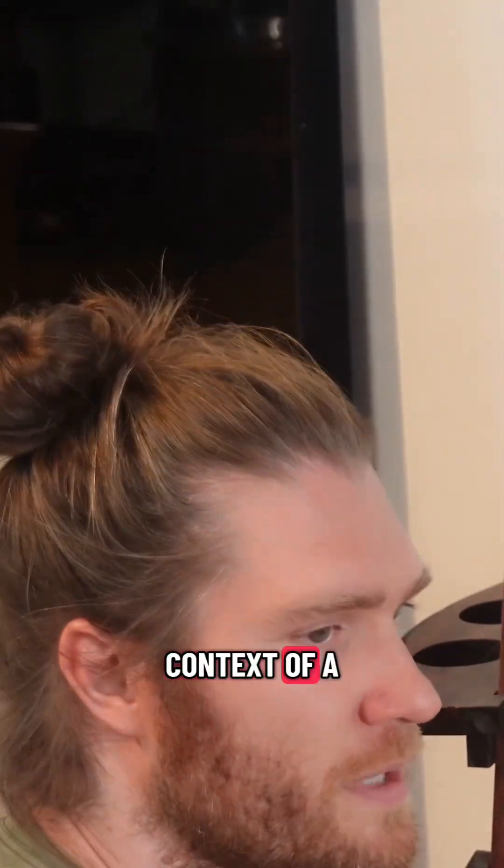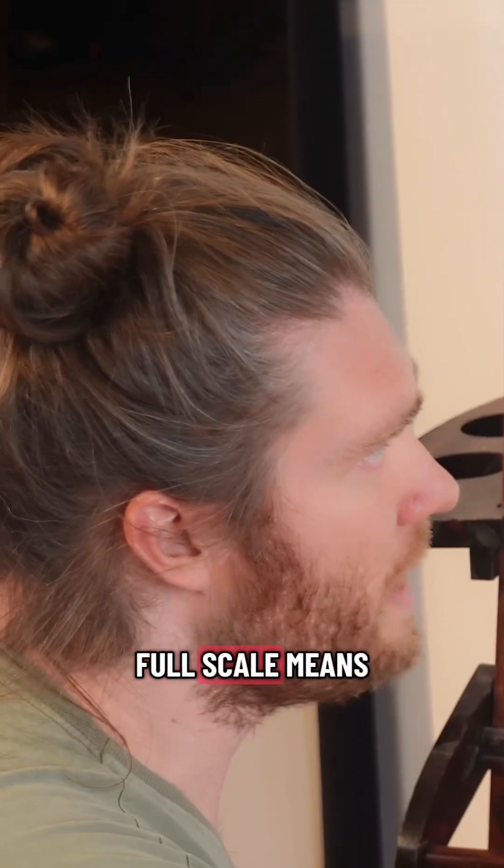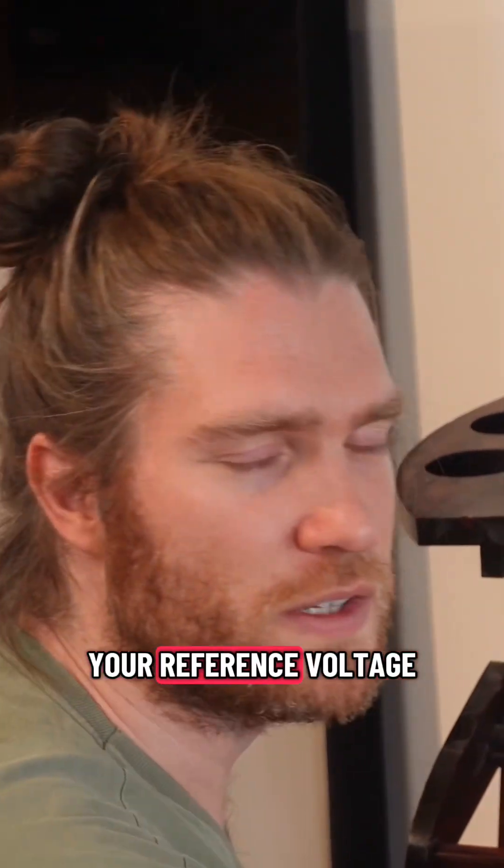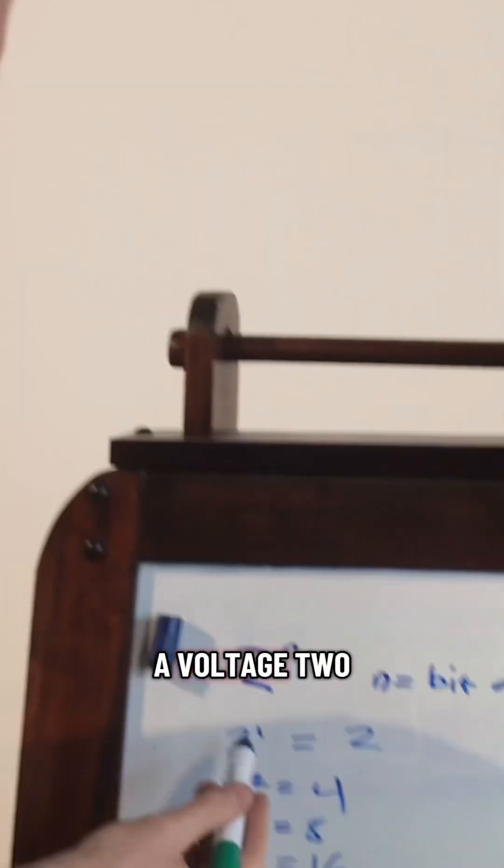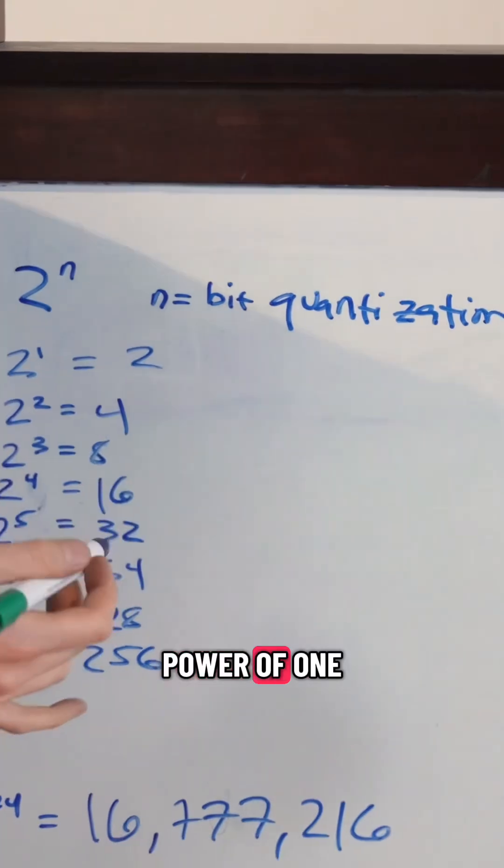Now, in the context of a digital system, full scale means your reference voltage. So represented by a voltage, 2 to the power of, yeah, 2 to the power of one, which is just on or off.